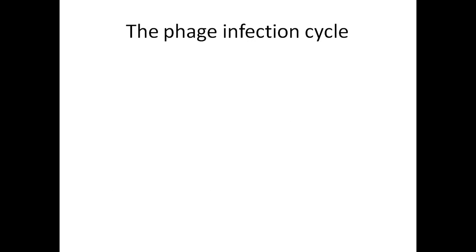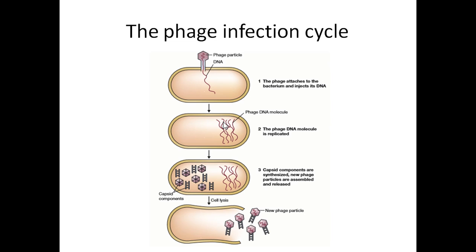Let us first discuss the generalized phage infection cycle, or lytic cycle — how does the phage infect a bacterium, multiply, and produce its copies? In the first step, the phage particle with the help of its tail will attach to the bacterium and will inject its DNA into the bacterial cell.